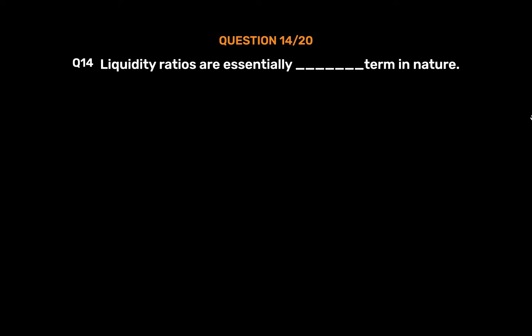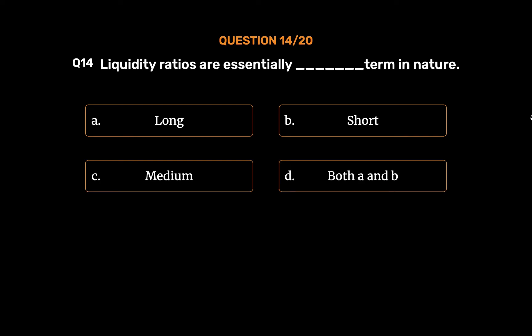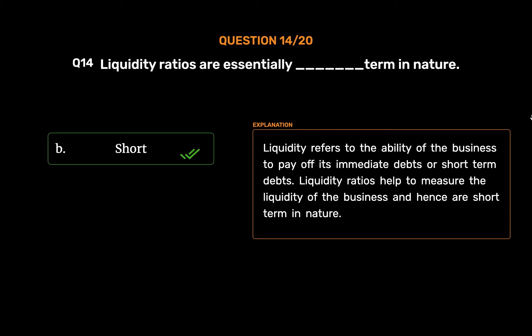Question number 14. Liquidity ratios are essentially what term in nature? Option A: Long. Option B: Short. Option C: Medium. Option D: Both A and B. The correct answer is Option B: Short. Liquidity refers to the ability of the business to pay off its immediate or short-term debts. Liquidity ratios help measure the liquidity of the business and hence are short-term in nature.